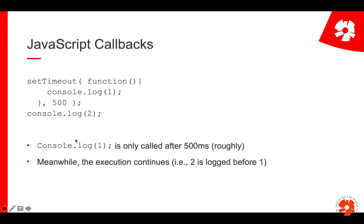That means JavaScript directly continues. So in this example, console.log is actually printed before console.log 1 is printed — we print 2 and then 1. But imagine that the first function does something you depend on. For example, it does an HTTP request that should give you back a return value and then you want to log that return value. If you did this, your log statement would not print anything because the return value is not yet there. This is why you need a callback function — something that automatically calls some code as soon as your function call has finished processing.